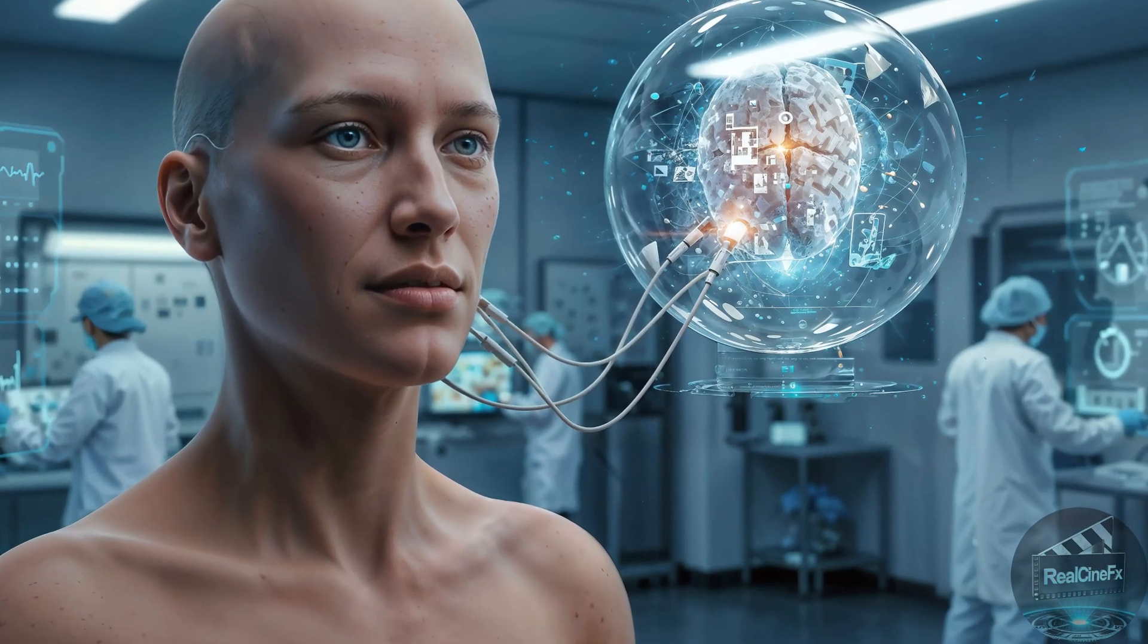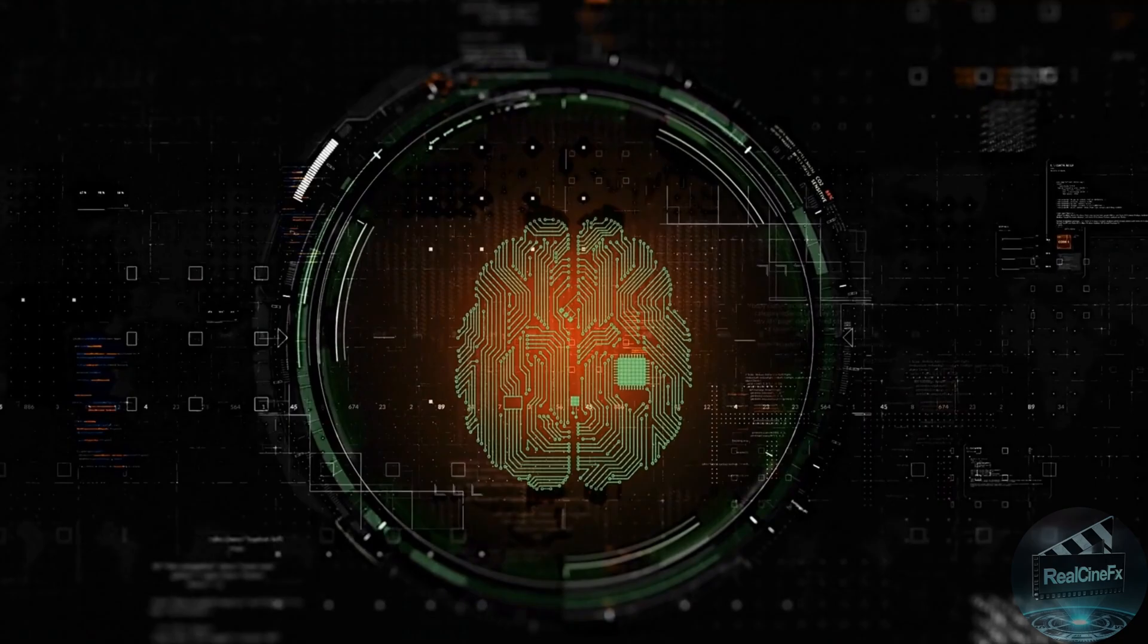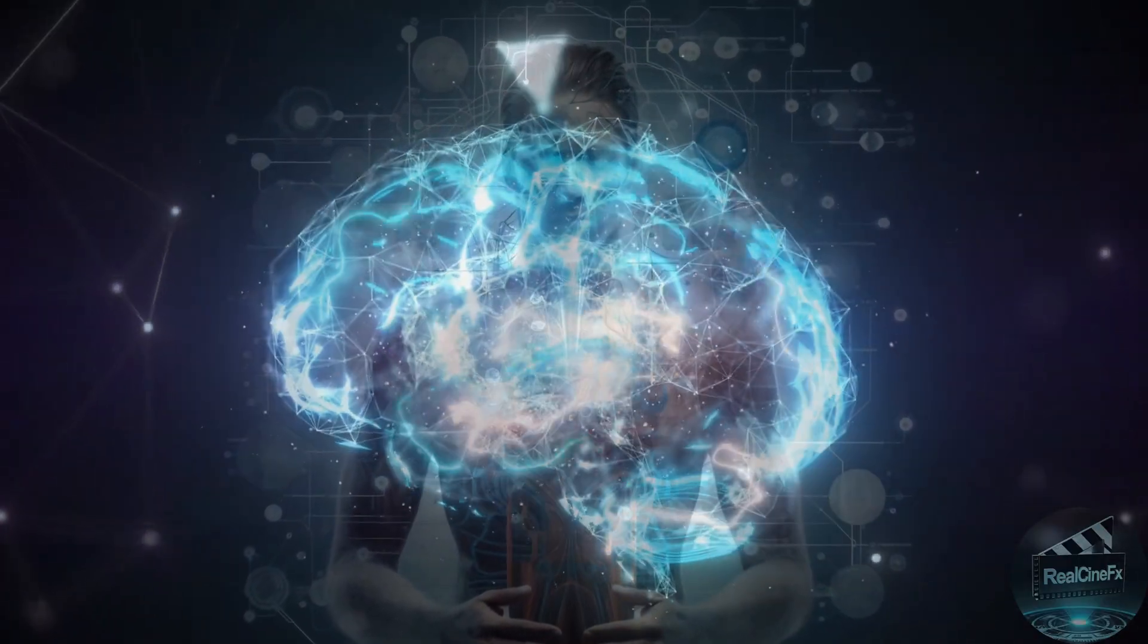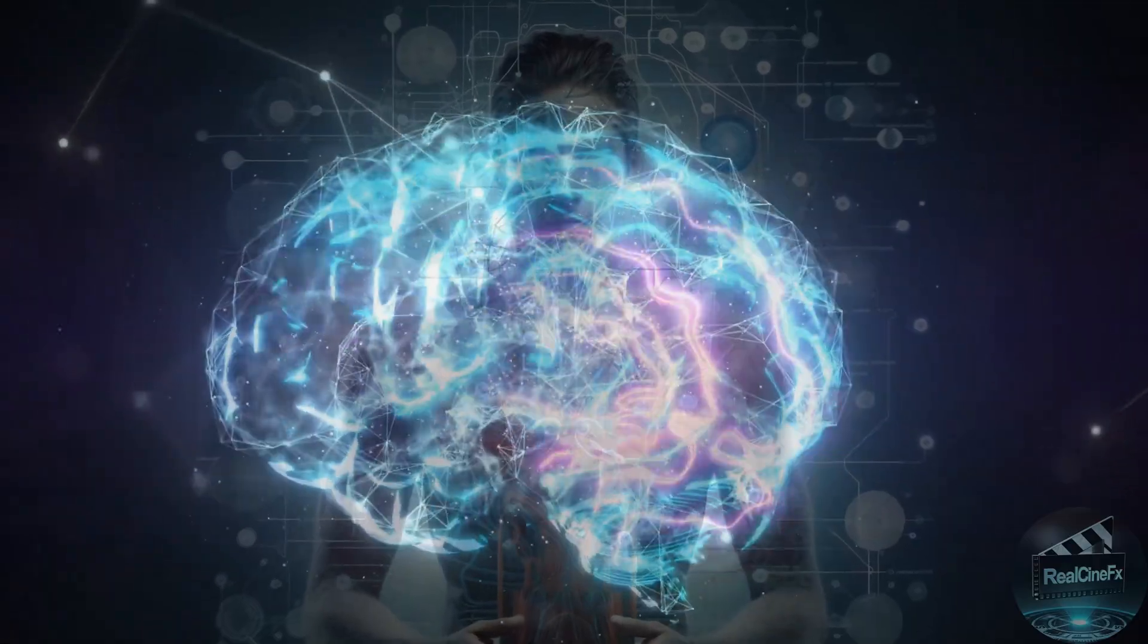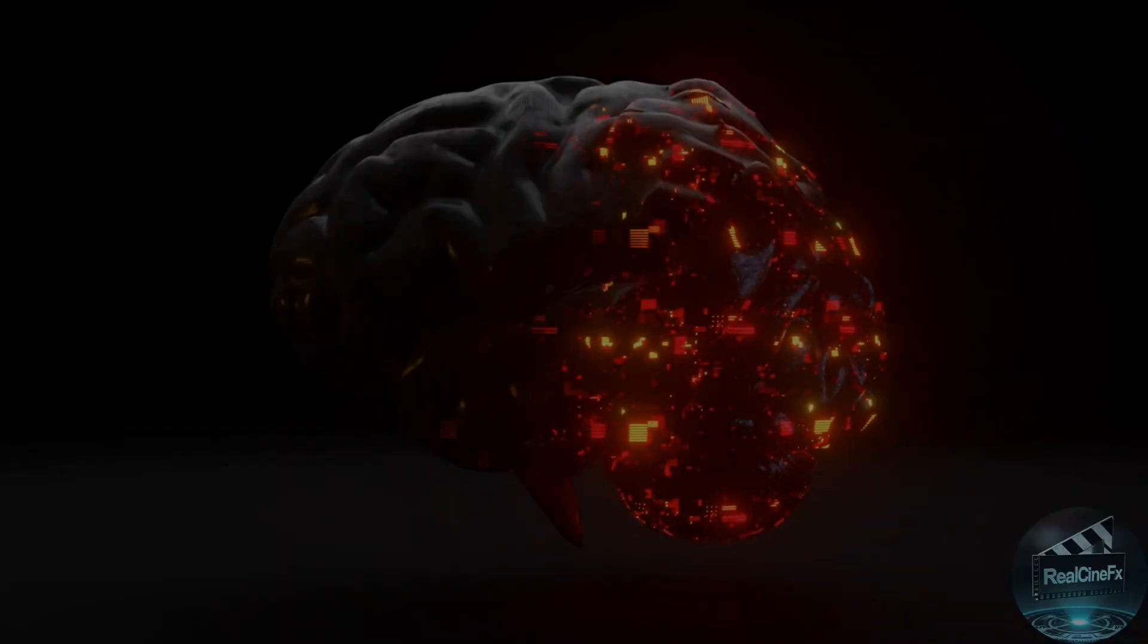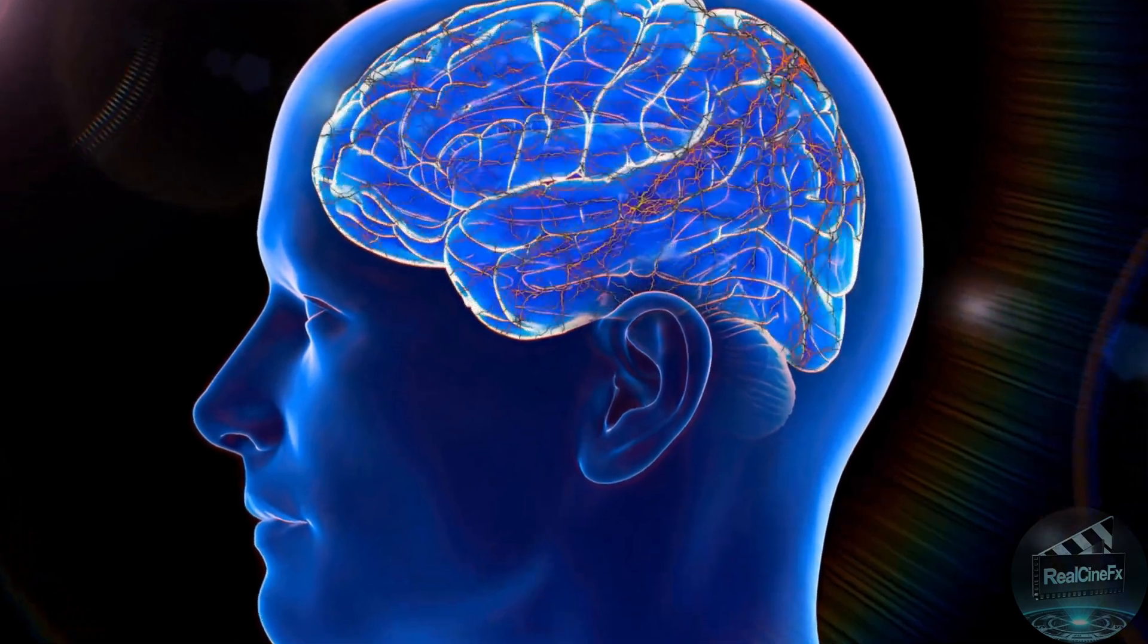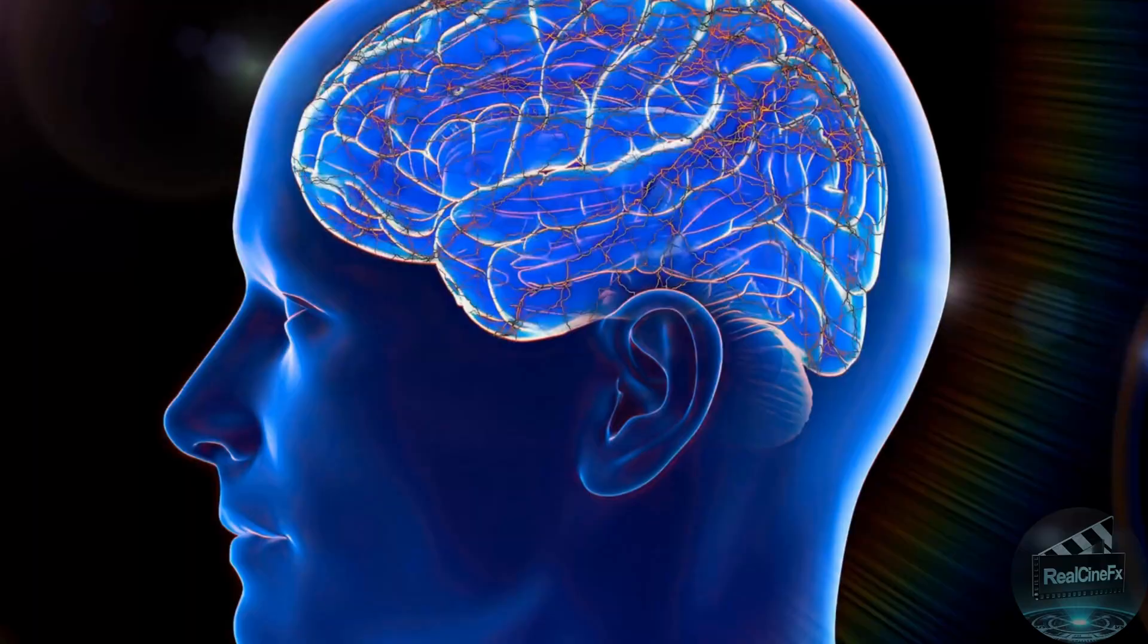Scientists call this mind-uploading or digital consciousness. This would mean scanning your brain's unique patterns, copying every memory, every feeling, and every thought, and then uploading it into a robot brain. A brain made of supercomputers and artificial neurons that mimic how your own brain works. But here's the big question.